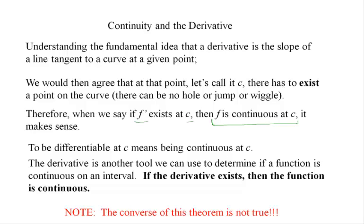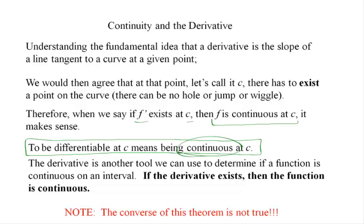To be differentiable at some input value automatically gives us continuity. If a function is differentiable at a point, it is continuous at that point. If the derivative exists, then the function is continuous — we're guaranteed of that.